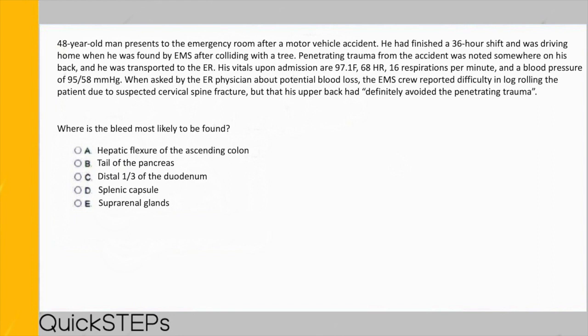In this question, all answer choices are retroperitoneal except the tail of the pancreas and the splenic capsule, which are both intraperitoneal. Between the two, traumatic damage with hemodynamic compromise is most commonly due to splenic damage, since the spleen holds a large volume of red blood cells. Whenever you see traumatic abdominal injury with falling blood pressure, immediately think possible splenic laceration, liver laceration, or duodenal hematoma, and rule out from there.